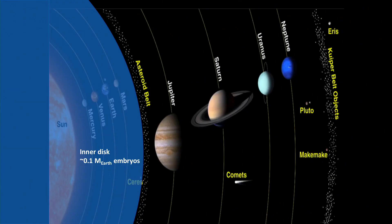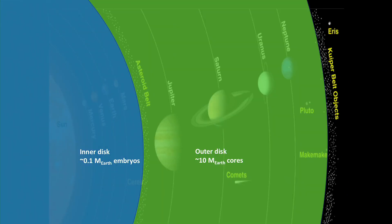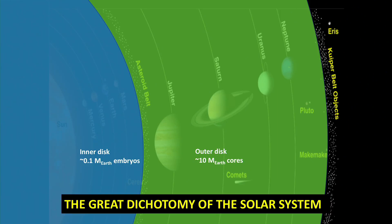So to summarize, the protoplanetary disk around the Sun was able to form planetary embryos in the inner part with a mass of about 0.1 Earth masses, whereas in the outer part it could form planetary cores, solid cores, with masses of about 10 Earth masses. And this mass ratio of 100 to 1 between the planets formed in the outer disk and in the inner disk is what we call the great dichotomy of the solar system.